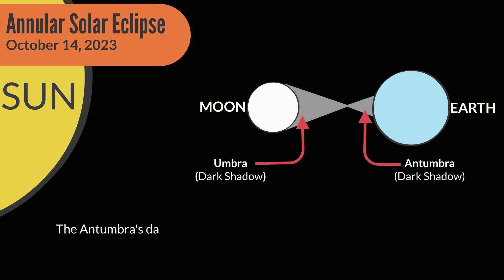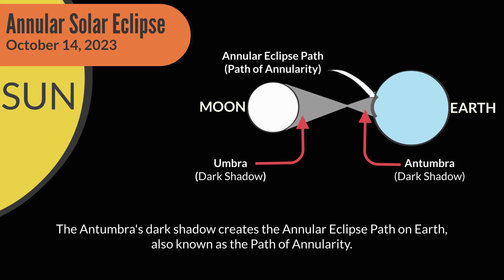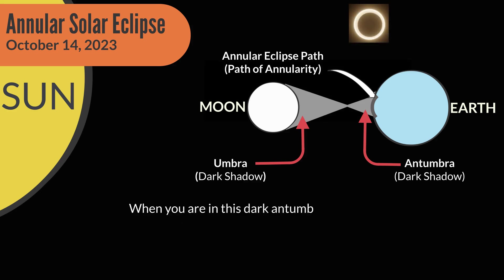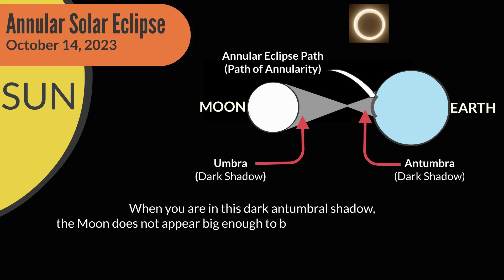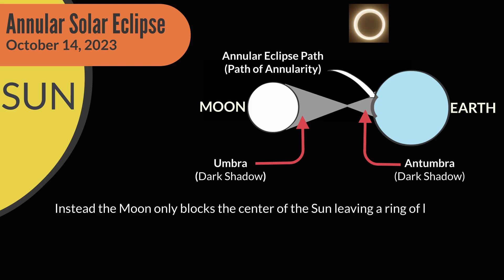The Antumbra is the dark part of the Moon's shadow that extends beyond the Umbra. The Antumbra's dark shadow creates the Annular Eclipse path on Earth, also known as the Path of Annularity. When you are in this Antumbral shadow, the Moon does not appear big enough to block the entire Sun from view. Instead, the Moon only blocks the center of the Sun, leaving a ring of light rather than the Sun's usual circular shape.